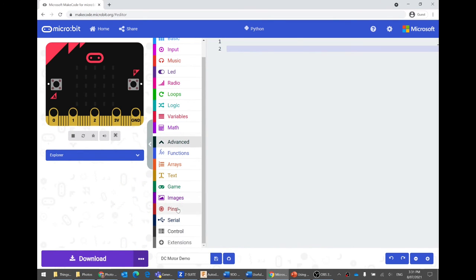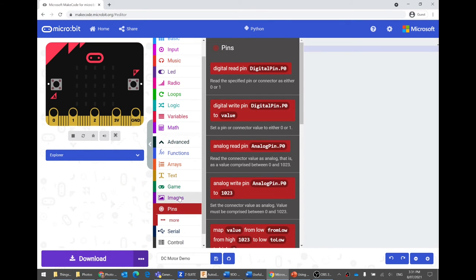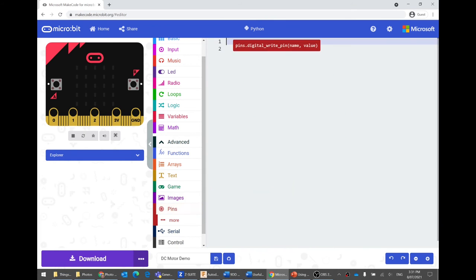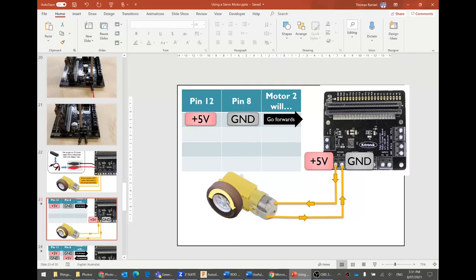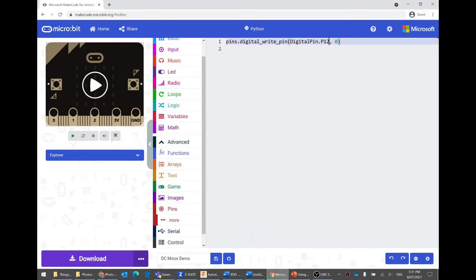Advanced. Pins. We're going to advance because we're advanced kitties doing advanced coding. And we go to pins. We don't want to read the pin. We want to write the pin. We want to set it to be either low or high. So I said pin 12. Pin 12 needs to be on. In other words, one.